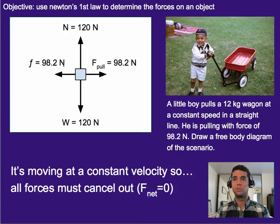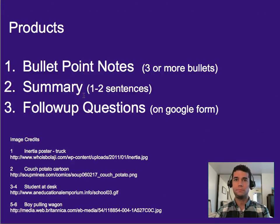Now, if you wanted to include that the wagon was moving in your free body diagram, remember you can always add a little arrow up top to say, hey, the velocity is this way. But we always only put forces attached to our free body diagrams. That's it for this one. Three or more bullet points worth of notes. One to two sentence summary. And please do your follow-up questions on Google Forms.